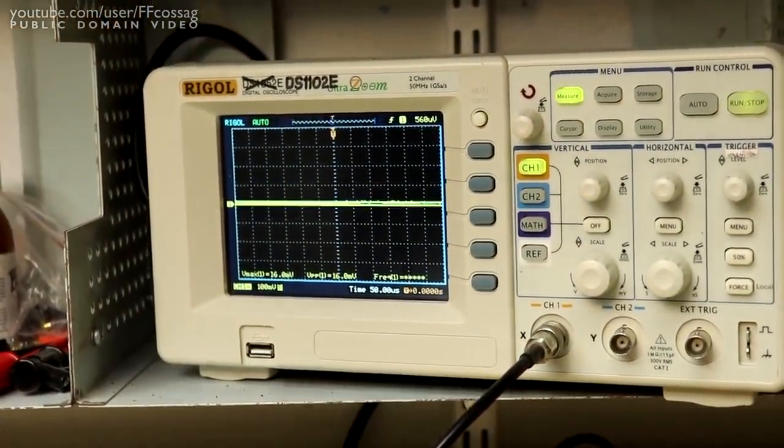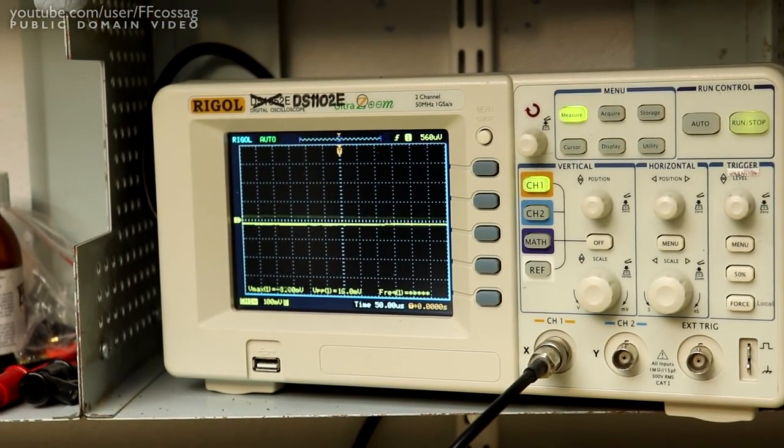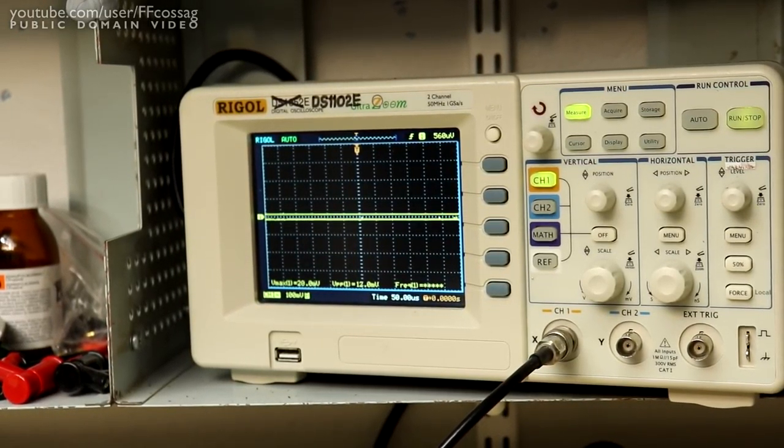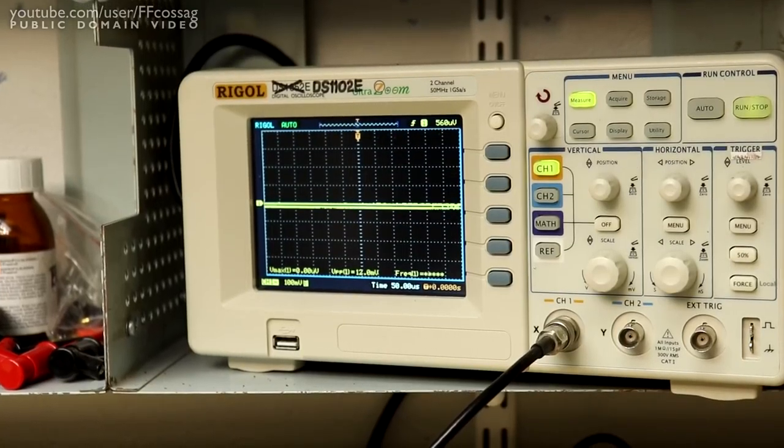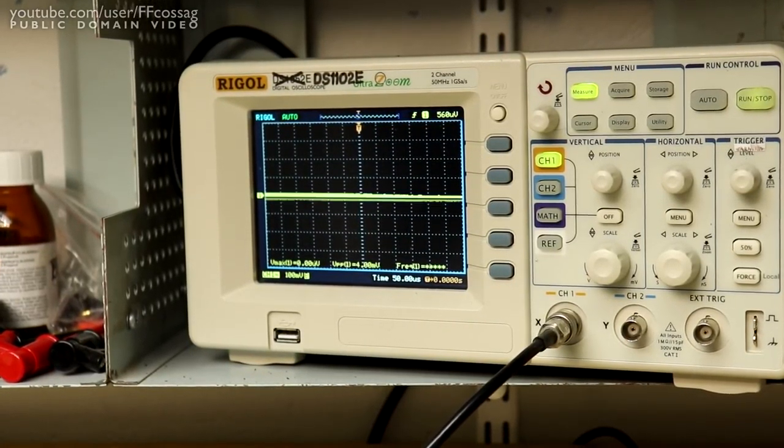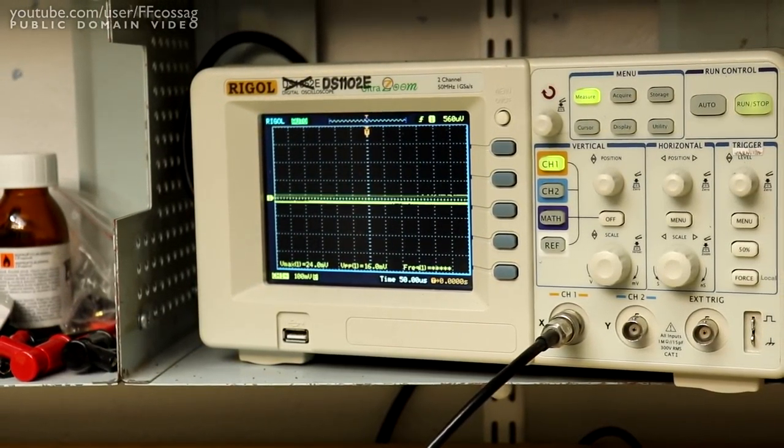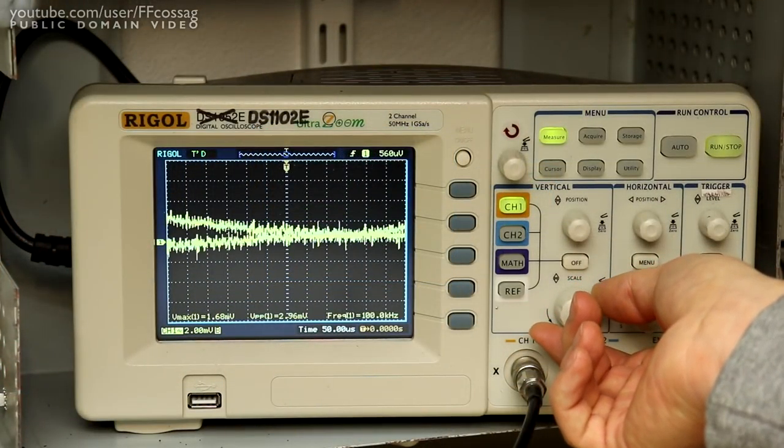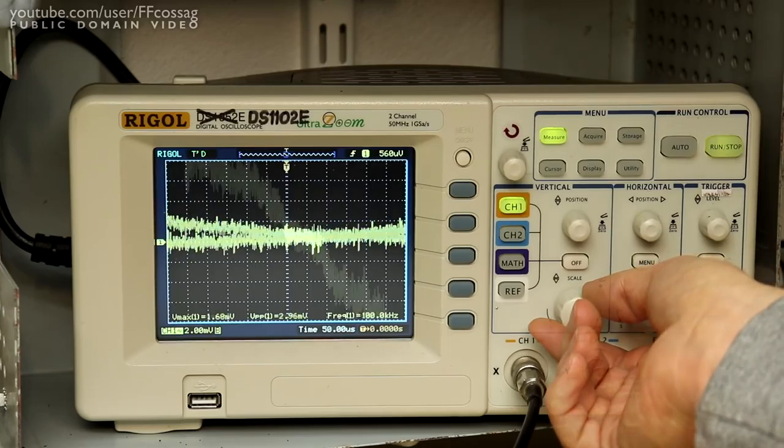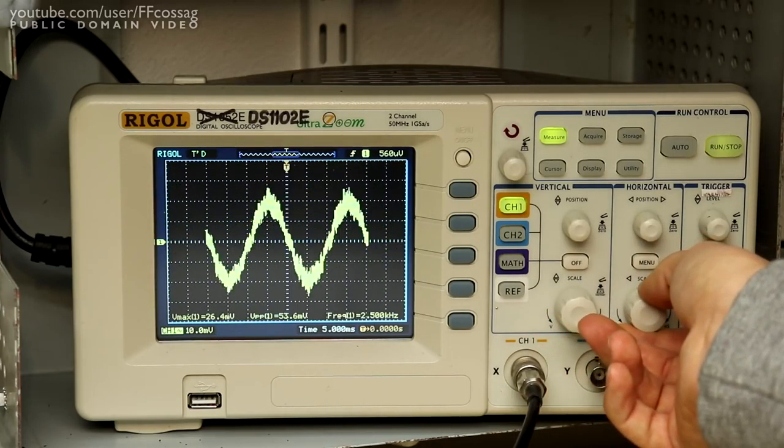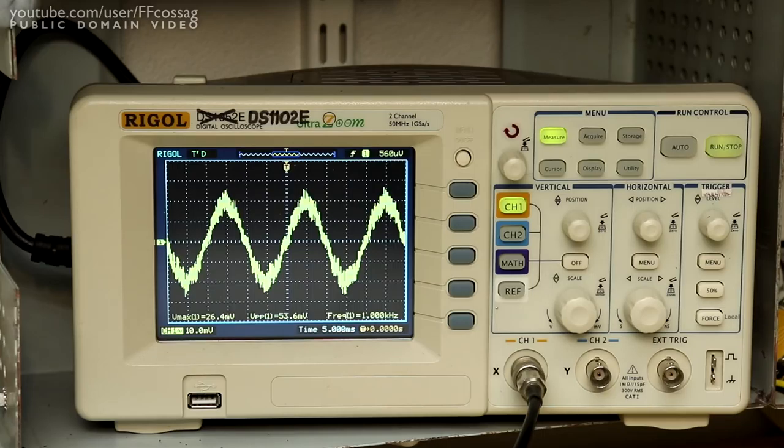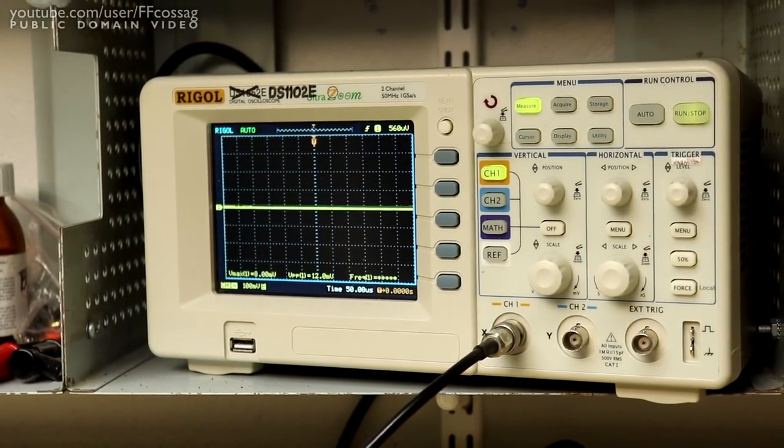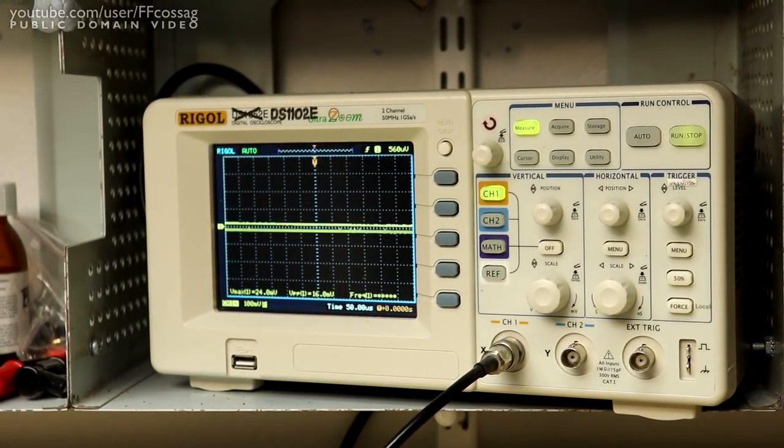And boy has it ever. Would you look at that. That's the scope turned on to the same settings as we were seeing horrible ripple with before. And there's just nothing there. We're not even triggering. We're seeing less than 10 millivolts peak to peak. And even if we zoom all the way in, the only trace of distortion we're seeing is a slight 15 millivolt peak to peak 50Hz hum, which frankly I'm not even sure is coming out of the power supply itself. So this has been a tremendous success.